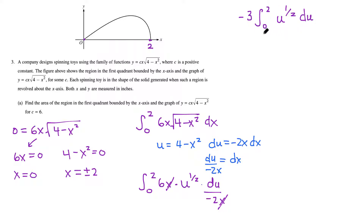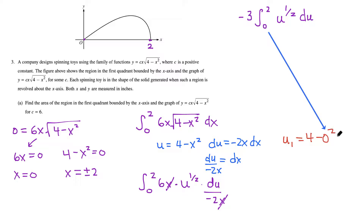There are multiple ways to solve this integral, but we'll use the method most commonly expected on the AP Calculus exam, which requires changing the bounds. Plugging the original lower bound of 0 into u = 4 − x² gives a new lower bound of 4. Plugging in the upper bound of 2 gives a new upper bound of 0.